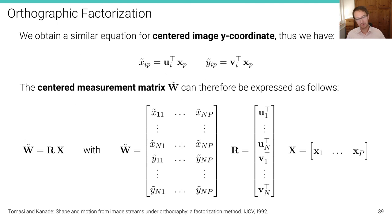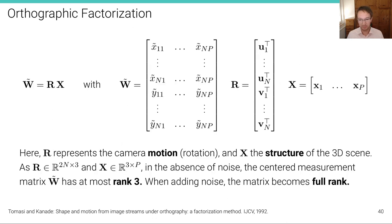So we have, in this normalized representation, found a very simple relationship. Here, a simple linear relationship that we have to solve now. Again, R represents the camera motion. In our case, it's orthographic, just rotation, and X, the structure. And that's why it's called a structure from motion, or sometimes structure and motion algorithm, because we're trying to recover from the observations, W alone, R and X together.